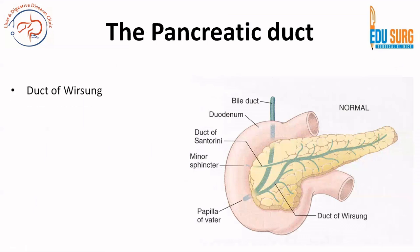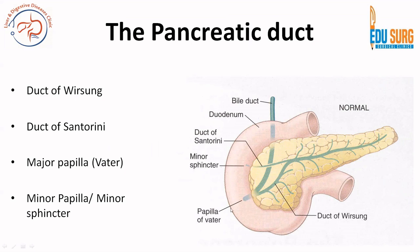Now coming to the pancreatic duct: we know the duct of Wirsung and the duct of Santorini, the major papilla and the minor papilla. The entire main duct drains through the major papilla, also called the papilla of Vater. The smaller duct — the duct of Santorini — opens through the minor sphincter at the minor papilla. We will look at pancreatic duct formation in detail when we study the embryology of the pancreas. The duct of Wirsung joins with the common bile duct, forms the ampulla of Vater, and opens into the duodenum through the major papilla or papilla of Vater.